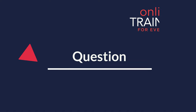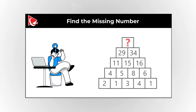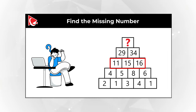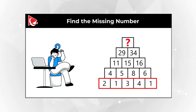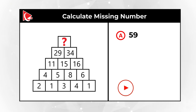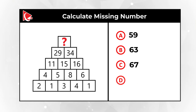Here's a tricky problem you might find challenging. You are presented with a pyramid. The top starts with the missing number. The second row contains 29 and 34. The next row contains 11, 15, and 16. The following row has 4, 5, 8, and 6. And the last row has 2, 1, 3, 4, and 1. You need to calculate the missing number. Choices: A) 59, B) 63, C) 67, D) 73.